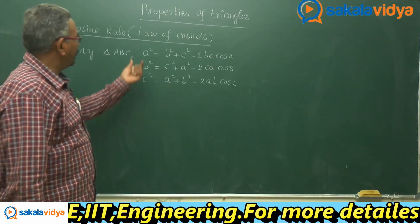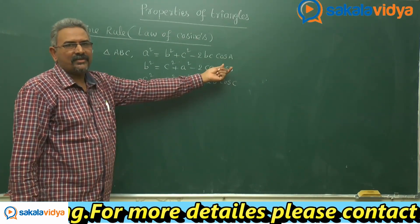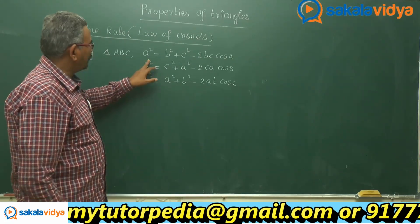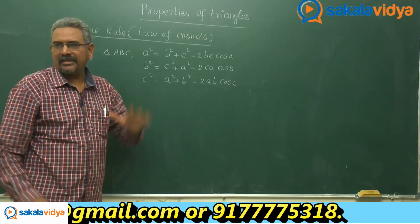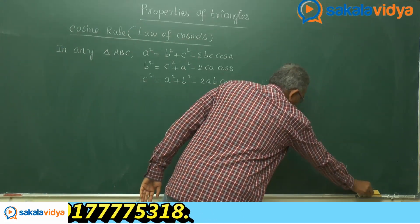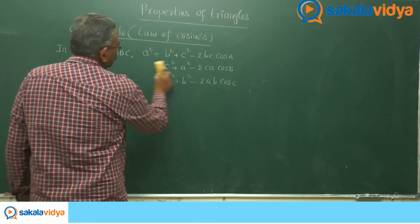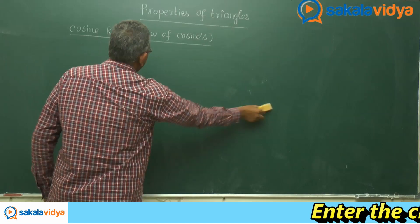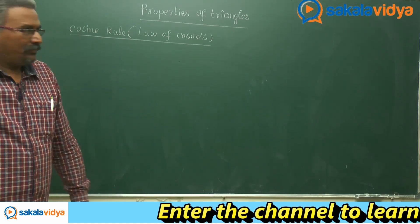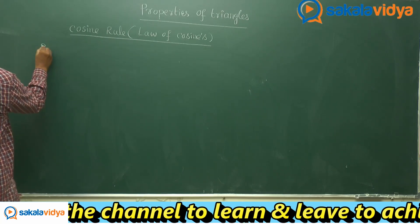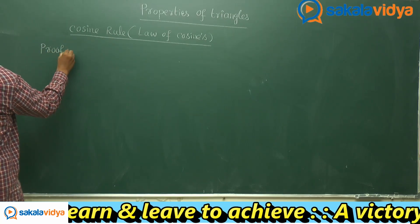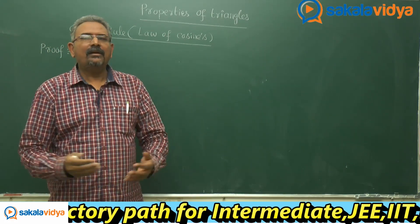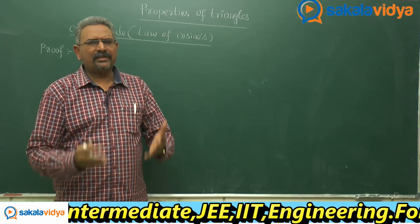Let us prove a² = b² + c² − 2bc·cos A. Similarly, we can prove the remaining ones also. For the proof, you can consider any triangle — it may be an acute angle triangle, an obtuse angle triangle, or a right angle triangle. Let us consider an acute angle triangle.